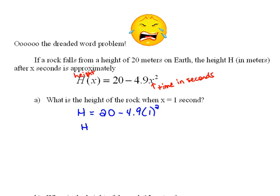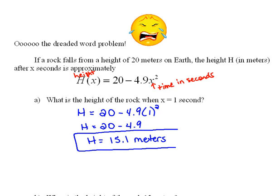So that means the height will equal 20 minus 1 squared is 1, times 4.9 is 4.9, and 20 minus 4.9 is 15.1. So what that is telling us is that after 1 second, according to this function, this rock is going to be 15.1 meters high.